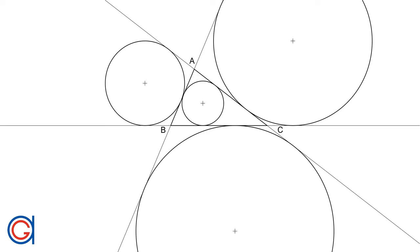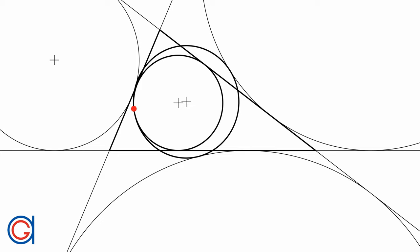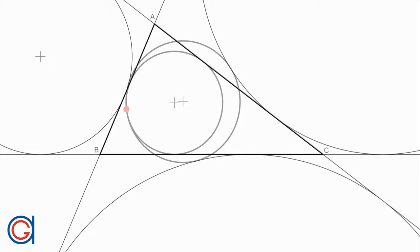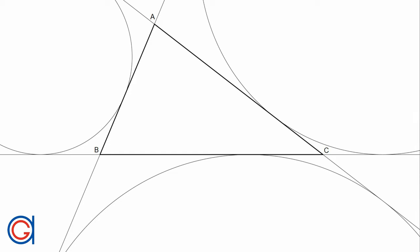Hello, today we are going to learn how to locate the Feuerbach point of any given triangle ABC. Feuerbach's theorem states that the nine-point circle is tangent to the three ex-circles of the given triangle ABC as well as its in-circle. The tangent point between the in-circle and the nine-point circle is known as Feuerbach's point, seen here in a red dot. This is the point that we want to locate today. Starting with the given triangle ABC and its three ex-circles, which we only show to demonstrate graphically that Feuerbach's theorem works.